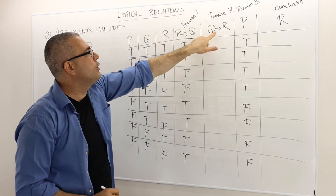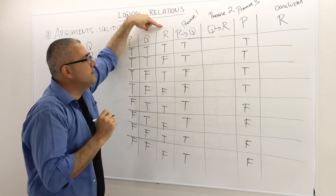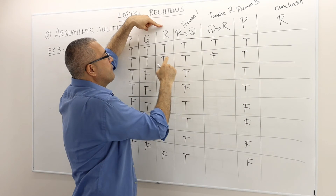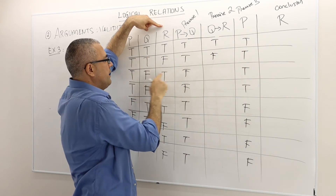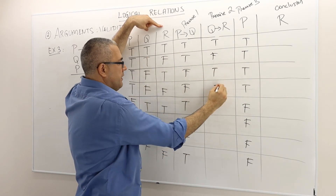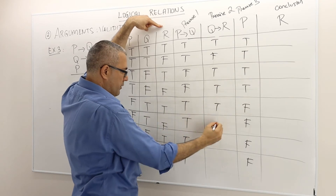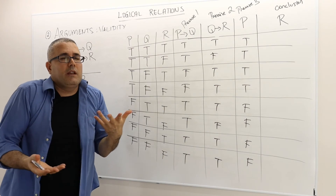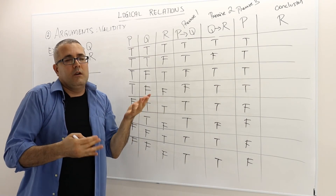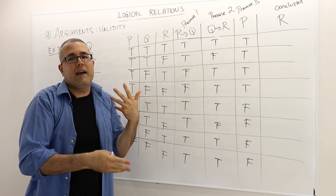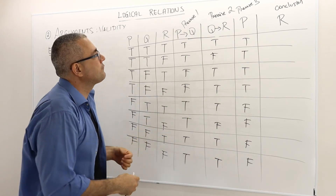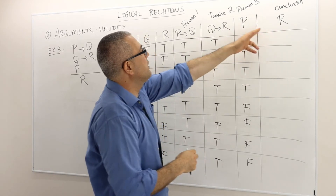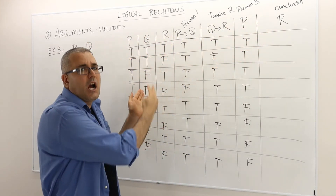For premise number two, Q implies R, I look at those two atomic sentences. It's true whenever both are true, and false whenever R is false but Q is true. The values work out as: true, false, true, true, true, false, true, true. The conclusion is R itself, so I just copy R again: true, false, true, false, true, false, true, false.